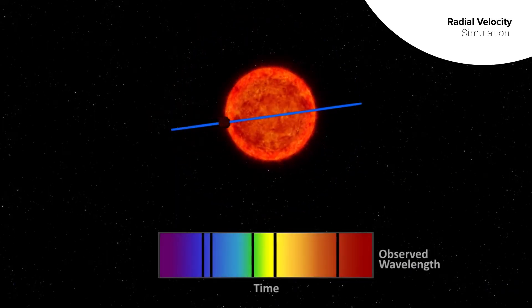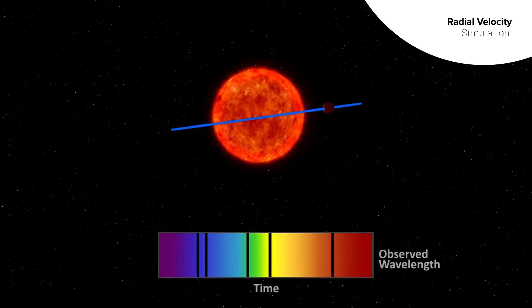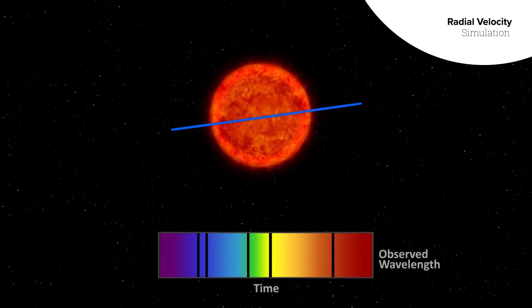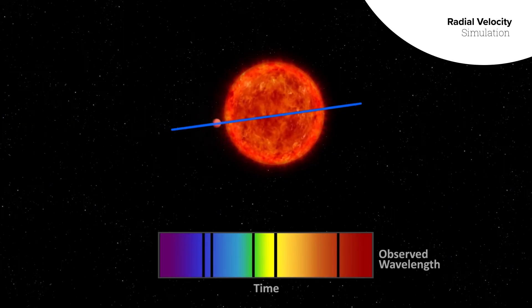If the planet and star are oriented so that the star is moving toward or away from us, instead of side to side, we can detect the planet as a shift in the star's light.